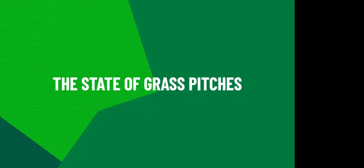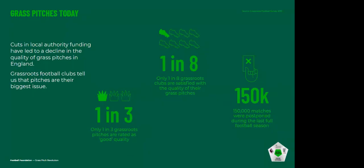In terms of the state of grass pitches today, we've seen a huge impact over the last 10 years from cuts in local authority funding, leading to a decline in quality across the country. Grassroots football clubs are telling us, County FAs, and the FA that pitch quality is the biggest issue. A survey in 2018 concluded that only one in three grassroots pitches are rated as good quality, only one in eight grassroots clubs are satisfied with their pitch quality, and in the preceding season 150,000 matches were postponed.